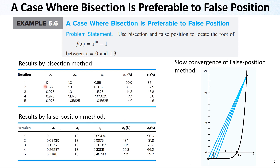Let's check the bisection first. We started from 0 and 1.3 for the lower and upper bounds, and get this value as the midpoint and continue from here. You can see that the upper bound stayed constant and the lower bound is changing, then the upper bound is changing and lower bound stays constant. Eventually, we are getting a value closer to 1, with an approximated error of 4% and a true error of 1.6%. After 5 iterations, we were able to get a good estimate.